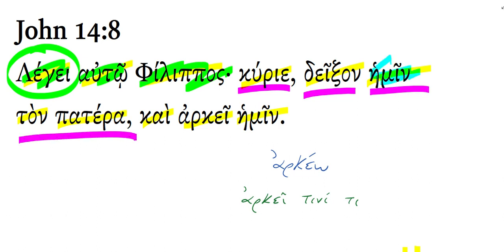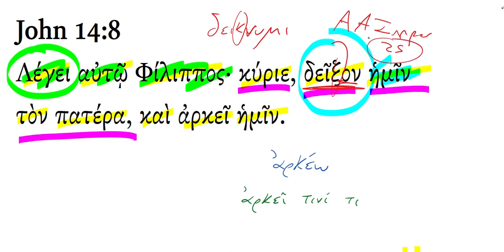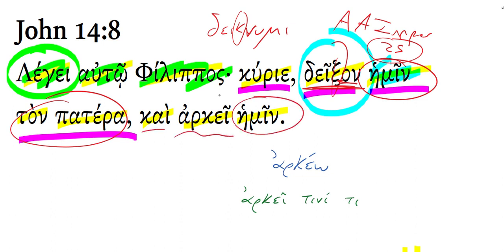This 'haemin' is just an indirect object, and the verb it's connected with is 'dekson' — that is an imperative of the verb 'deiknumi.' Deiknumi means 'to show,' and here you can see how sigma has combined with that kappa right there, and then we have this ending. This is just an aorist active imperative, second person singular — 'show' — second singular because Philip is speaking to Jesus: 'Show to us the Father, and it will be enough for us, or it will be sufficient for us.'